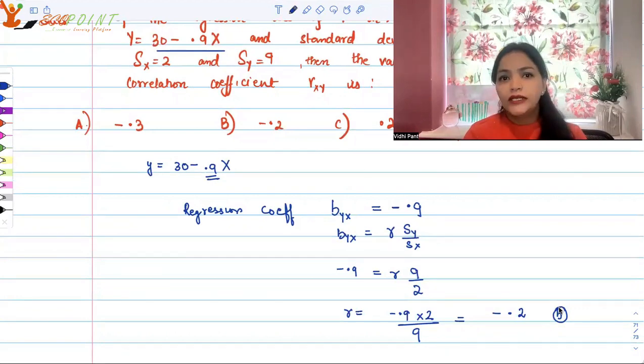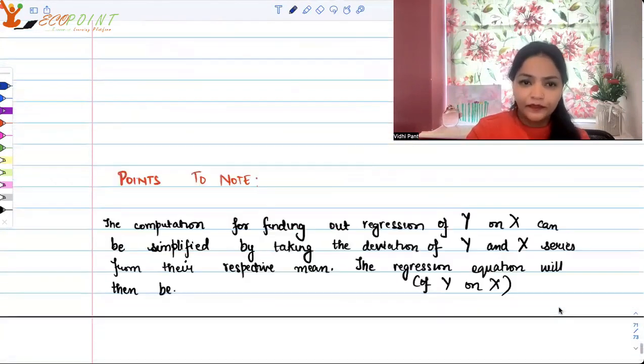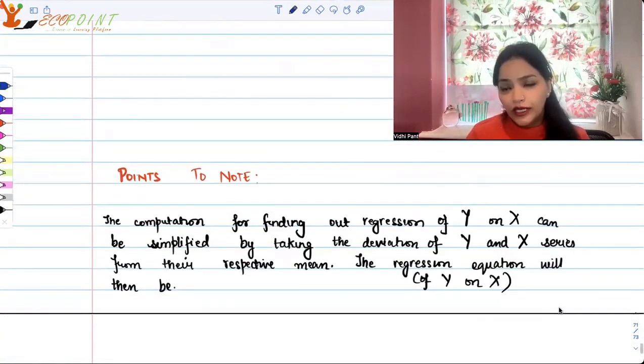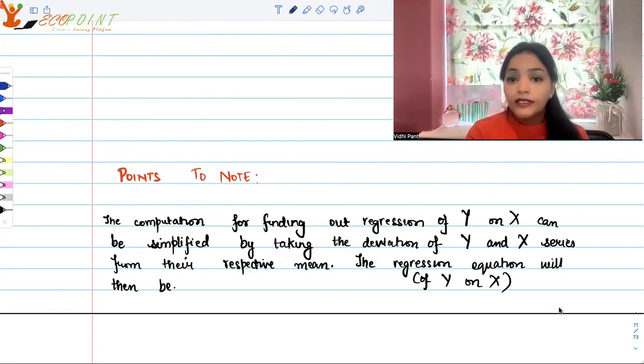What things have we used in regression? Points to note. I want you guys to just quickly note down these points. You can pause the video and do that. The computation for finding out regression of y on x can be simplified by taking the deviation of y and x series